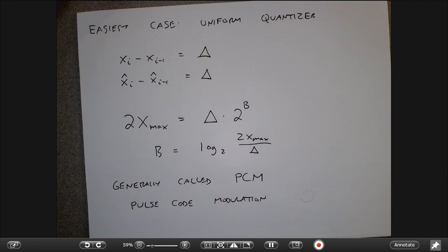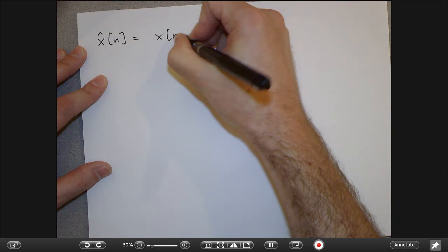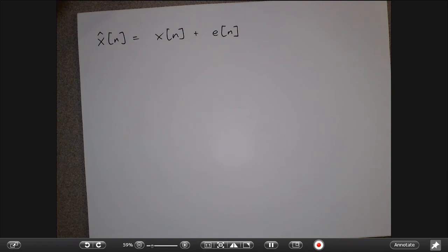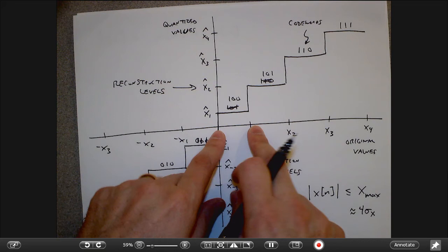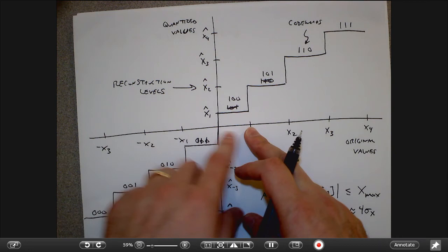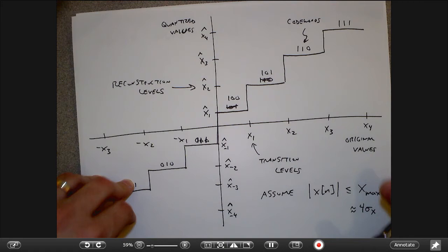We can analyze how well we expect to do. The smaller delta is, the better the quantization should be — the more faithful the quantized value to the original. My reconstructed value equals the original value plus some error. The biggest the error could be: if the interval width is delta and I quantize to the midpoint at delta/2, the worst case is being off by at most delta/2. So the error ranges in the interval [−delta/2, +delta/2].